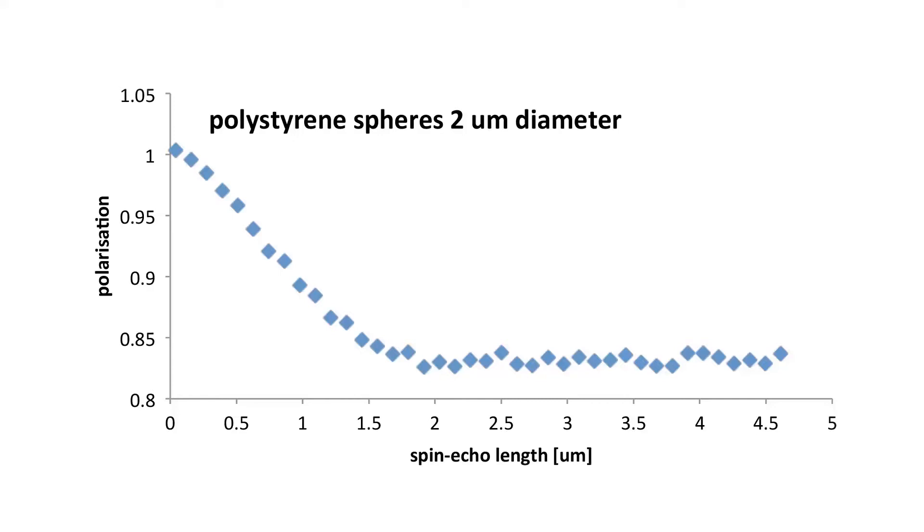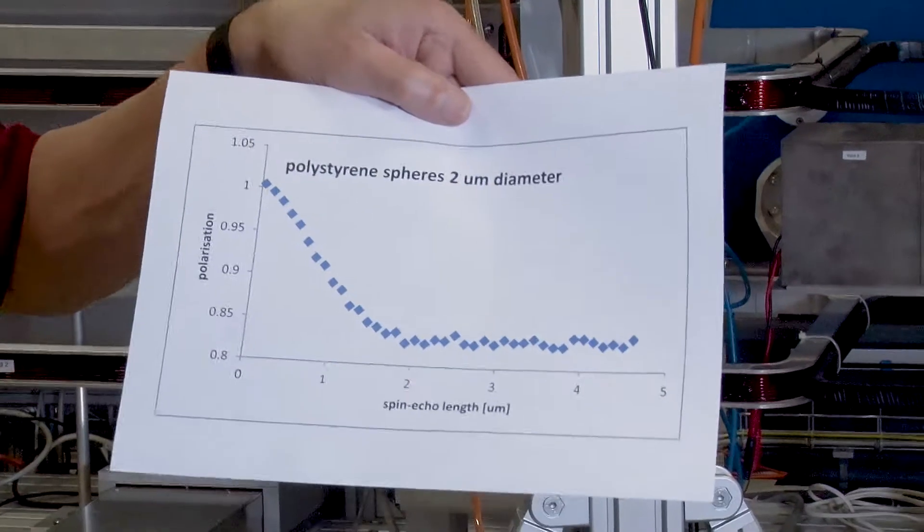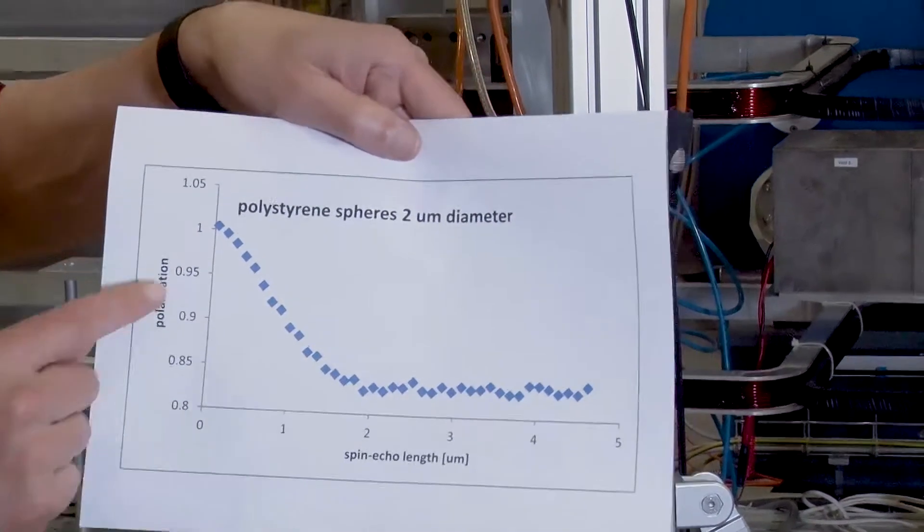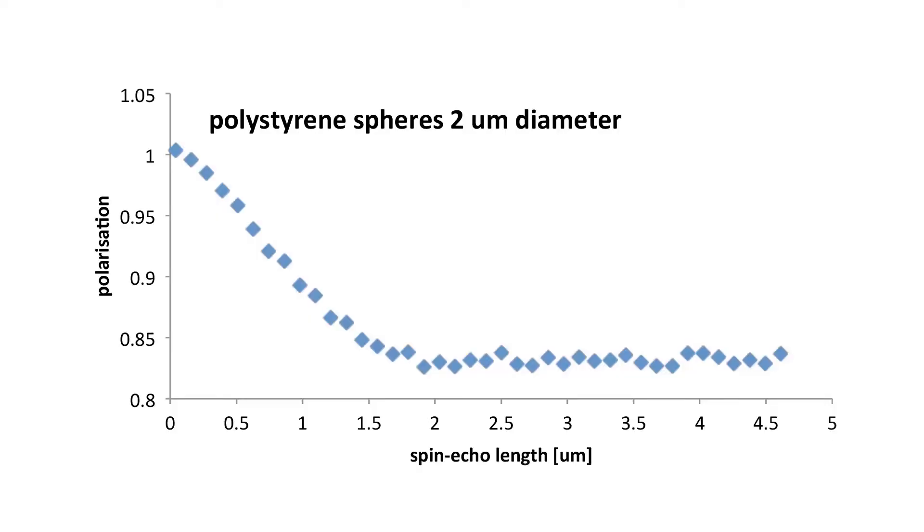This is a measurement that we did on polystyrene spheres. The diameter of 2 micrometers is a kind of a model system to illustrate the technique.